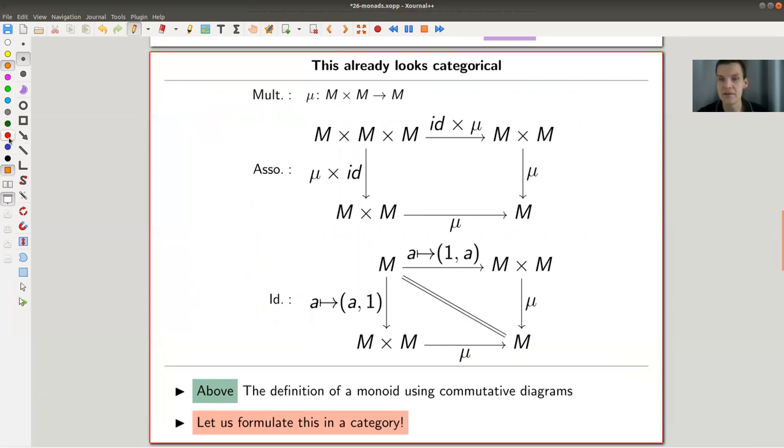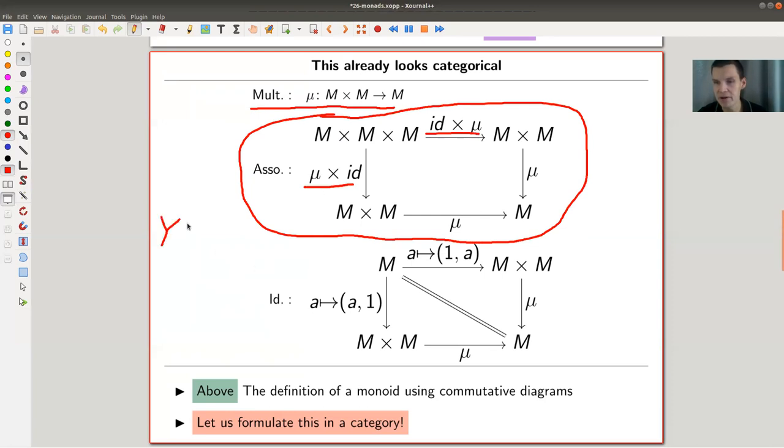And what does it mean to phrase it categorically? Well, you phrase it in terms of commutative diagrams. For example, you can say that multiplication is nothing else than a map from m cross m to m. And m is, of course, my monoid here. And then associativity is just this commuting diagram.